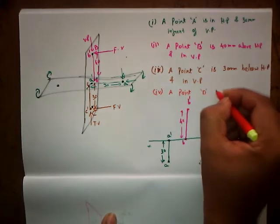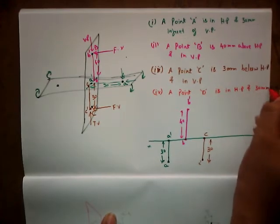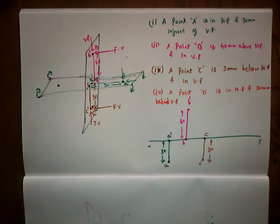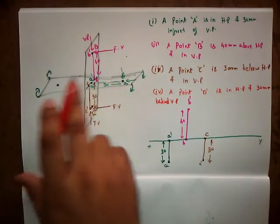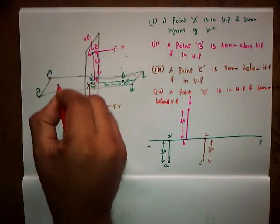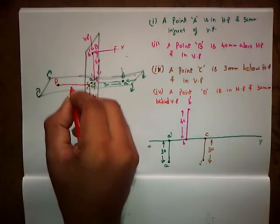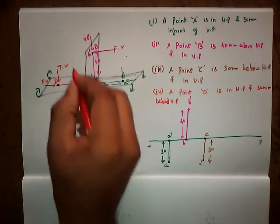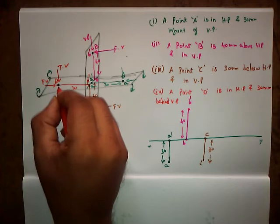Point D is in HP and 30 mm behind VP. According to the question, the point name is D, it is in HP — it can be over here or else here — and 30 mm behind VP, behind meaning go back. So the point is in HP and 30 mm behind. This is point D and this is 30 mm. This is our front view and this is our top view. For the front view we get small d dash, and for the top view we get capital D there itself.